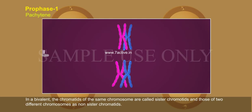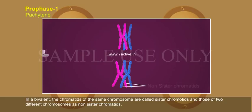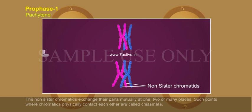In a bivalent, the chromatids of the same chromosome are called sister chromatids, and those of two different chromosomes are called non-sister chromatids. The non-sister chromatids exchange their parts mutually at one, two, or many places.